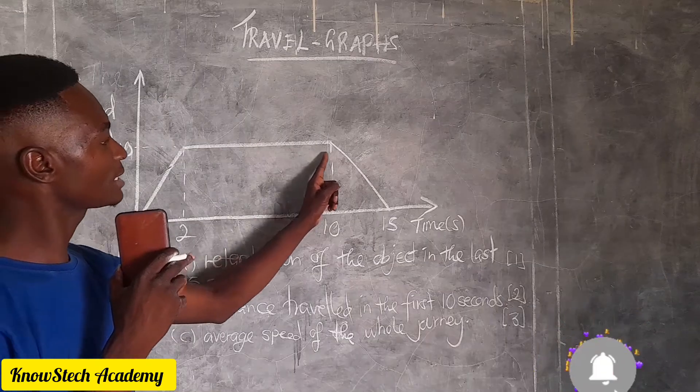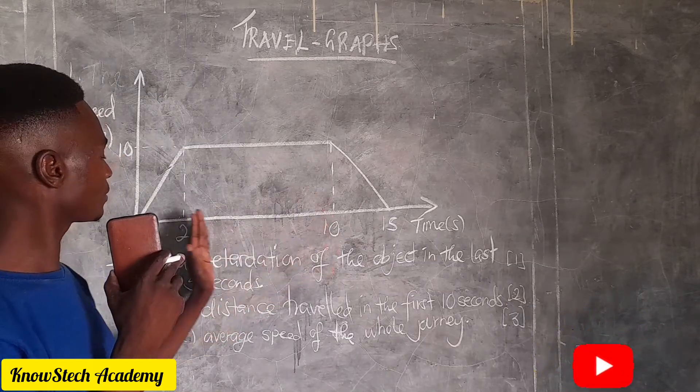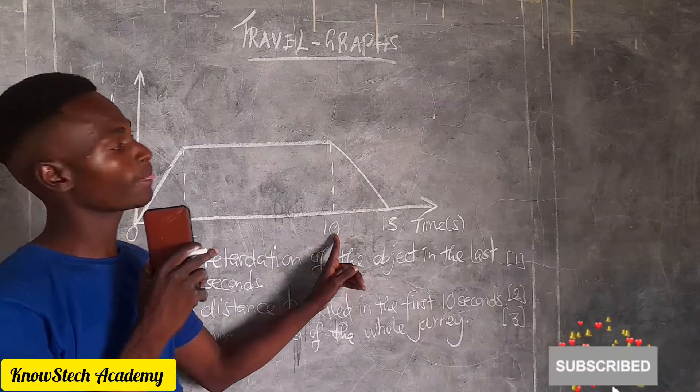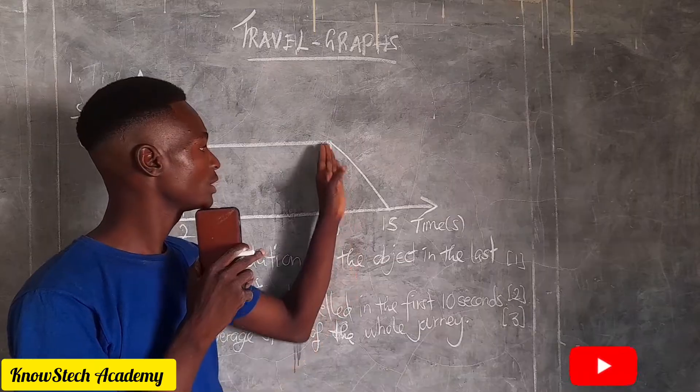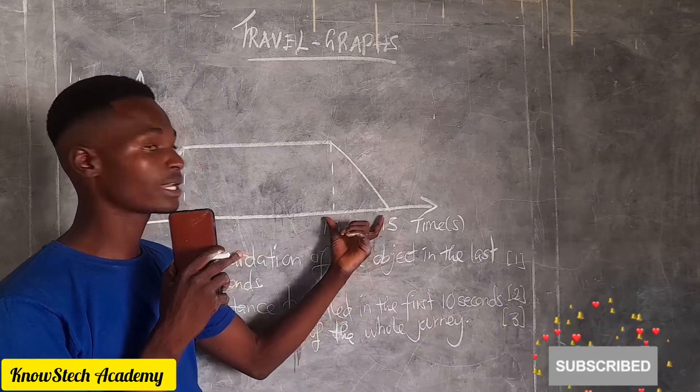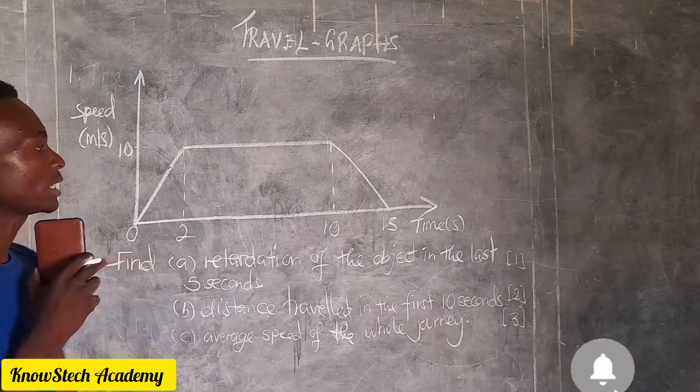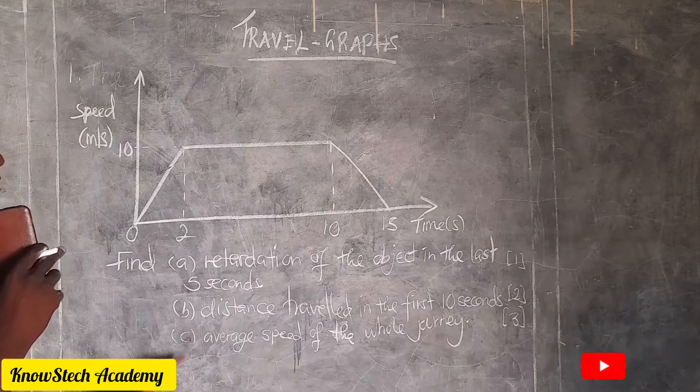For the next eight seconds. So two plus eight is this. Then it decelerates, it reduces the speed to zero here in the next five seconds. All right, so the first question is asking us to calculate the retardation here, the retardation in the last five seconds.